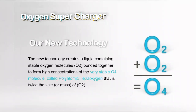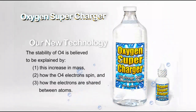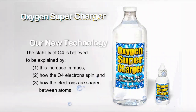The new technology creates a liquid containing stable oxygen molecules, O2, bonded together to form high concentrations of the very stable O4 molecule, called polyatomic tetraoxygen, that is twice the size, or mass, of O2. The stability of O4 is believed to be explained by the increase in mass, how the O4 electrons spin, and how the electrons are shared between atoms.